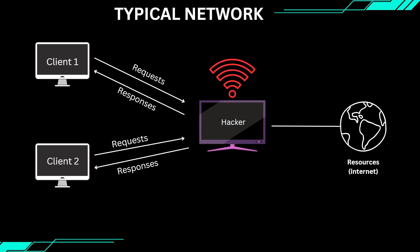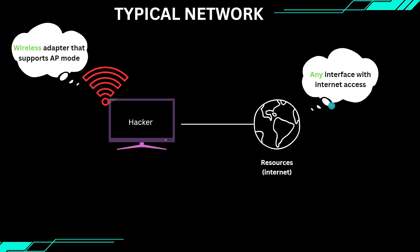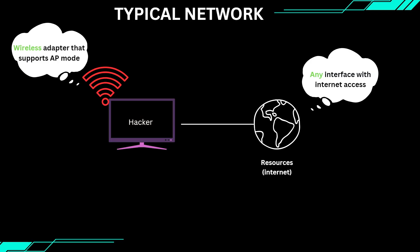Once the clients are connected, we can launch all of the man-in-the-middle attacks we have demonstrated earlier without needing to run ARP spoofing or anything fancy. All you need is a computer running Kali Linux, internet access, and a wireless interface capable of broadcasting the Wi-Fi signal. Now let's break down what you will need: an internet connection — this could be through Wi-Fi, Ethernet, a 3G or 4G dongle, or even a virtual interface.